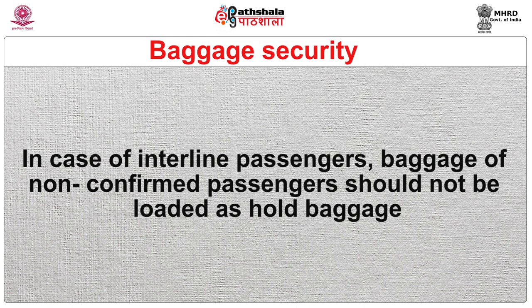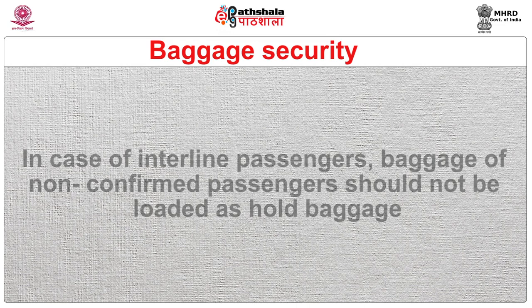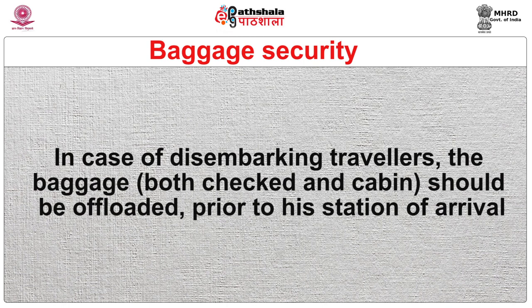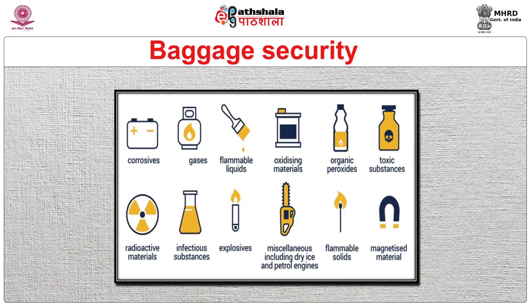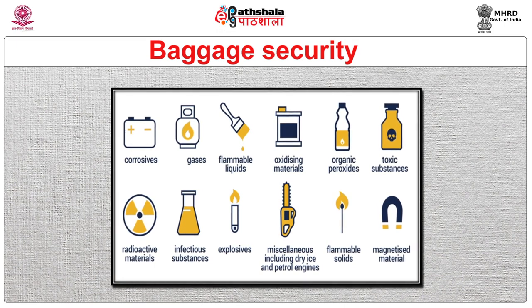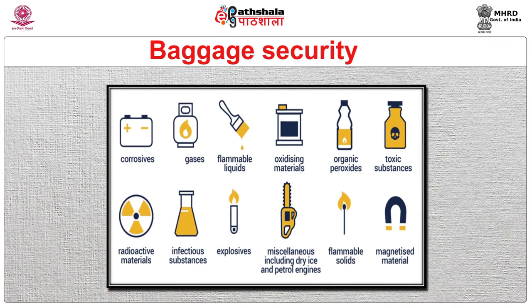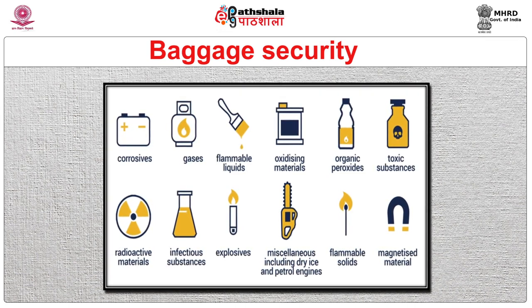If baggage is collected and transferred in a sterile area, then rescreening is not required. Reconciliation of passengers or baggage must be maintained for all flights — for standby travelers, check-in of passengers in groups, or in case of voluntary or involuntary deplaning. In case of online and transfer passengers, the checked baggage comes under additional security controls. In case of interline passengers, baggage of non-confirmed passengers should not be loaded as hold baggage. In case of disembarking travelers, baggage — both checked and cabin — should be offloaded prior to his station of arrival. After receipt of checked baggage, it is kept in a safe area and the cabin baggage is individually identified and marked as crew. The norms for dangerous goods carriage should refer to the IATA Dangerous Goods Regulations (DGR).